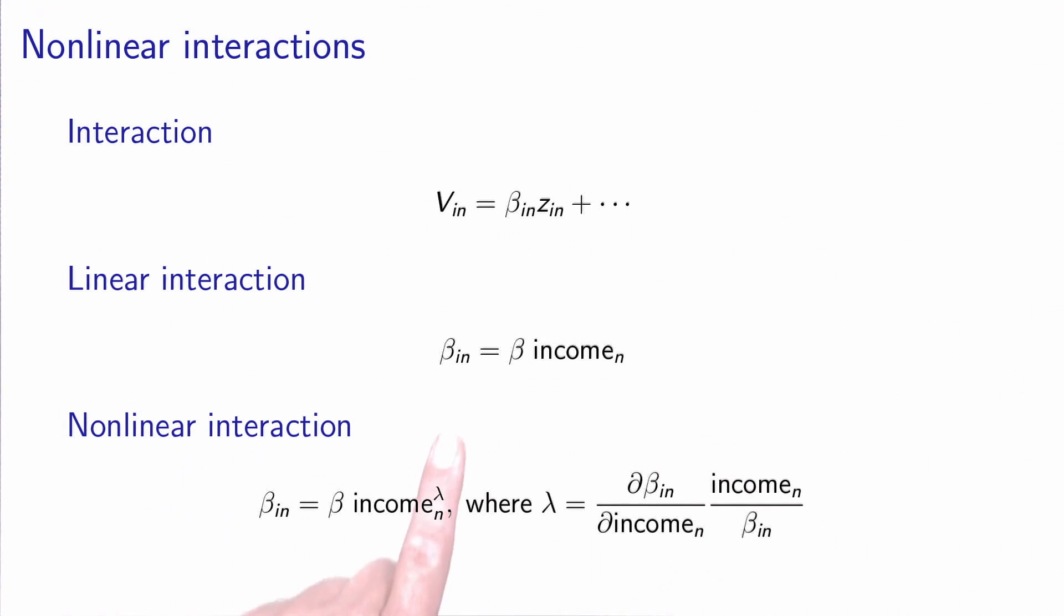For example, we define βin equal β, a parameter to be estimated, times the income of individual n, so that people with different income will have a different parameter.